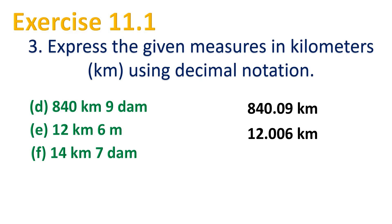Question f: 14 kilometers 7 decameters — we start with 14 point because we have 14 kilometers. There is no hectometer so that will be 0, then 7 decameters, giving 14.07 kilometers. Those are the answers of exercise number three: express the given measures in kilometers using decimal notation.